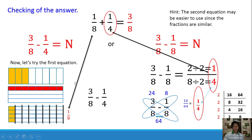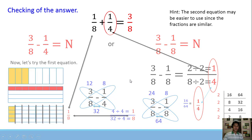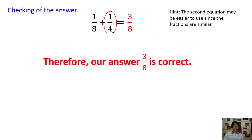We can also check using the butterfly method: 3/8 minus 1/4. So 3 × 4 = 12, 8 × 1 = 8, and 8 × 4 = 32. 12 minus 8 is equal to 4, copy 32. Then 4 ÷ 4 = 1 and 32 ÷ 4 = 8. Our answer is 1/8. Therefore, our answer is correct — whichever method we use to check, we get the correct answer of 3/8.